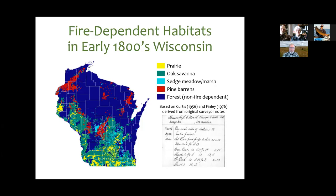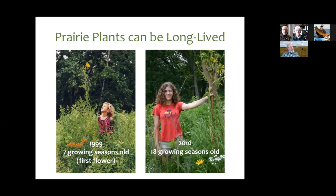One example of those notes mentions entering a prairie and talks about burr oaks and other trees you would see in this prairie-savanna landscape. Scientists at UW-Madison, starting with John Curtis, took these surveyor notes and actually turned them into maps — they could reconstruct what type of vegetation was present on the landscape just from those surveyor notes.